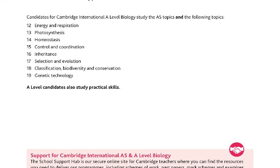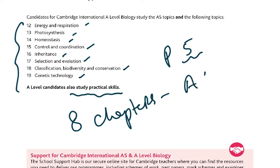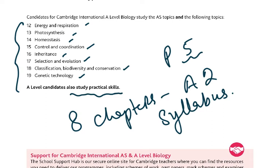The 8 A2 chapters are very difficult. You might think 'only 8 chapters,' but they are very complex with a lot of detail to learn, memorize, and understand. They are: respiration, photosynthesis, homeostasis, control and coordination, inheritance, selection and evolution, classification, biodiversity and conservation, and genetic technology. You also need to know practical skills for Paper 5, which examines your analytical skills and your ability to plan an experiment.